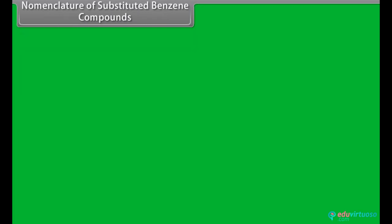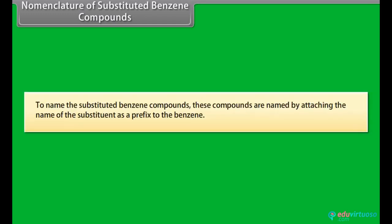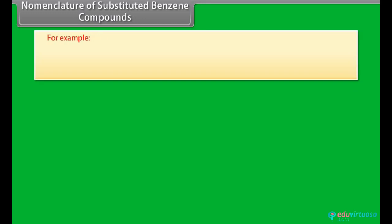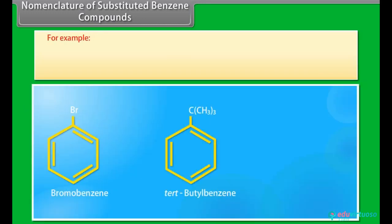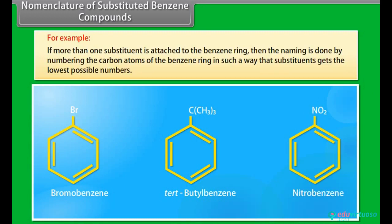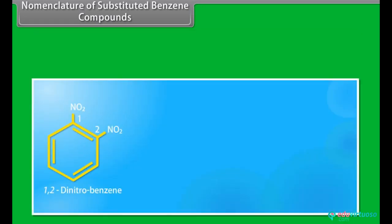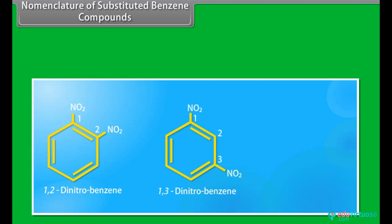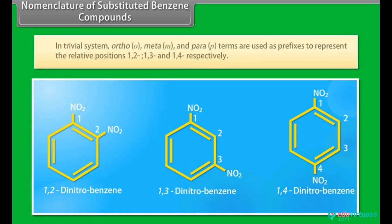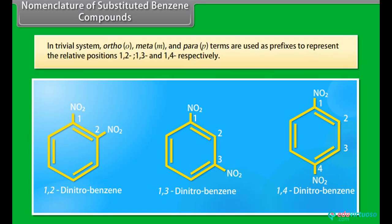Nomenclature of substituted benzene compounds: to name substituted benzene compounds, the name of the substituent is attached as a prefix to benzene. For example, bromobenzene, tert-butylbenzene, nitrobenzene. If more than one substituent is attached to the benzene ring, naming is done by numbering the carbon atoms of the benzene ring so that substituents get the lowest possible numbers. For example, 1,2-dinitrobenzene, 1,3-dinitrobenzene, 1,4-dinitrobenzene. In the trivial system, ortho (o), meta (m), and para (p) terms are used as prefixes to represent the relative positions 1,2; 1,3; and 1,4 respectively.